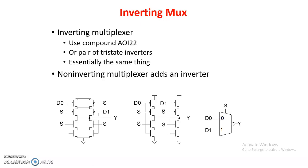This is similar to an AOI-2-2 (AND-OR-Inverter) structure studied earlier. So that covers the inverting and non-inverting MUX. Using gate implementation we require 20 transistors; using a transmission gate MUX we require only 4 transistors; using CMOS logic we require only 10 transistors. That is the advantage of CMOS logic.